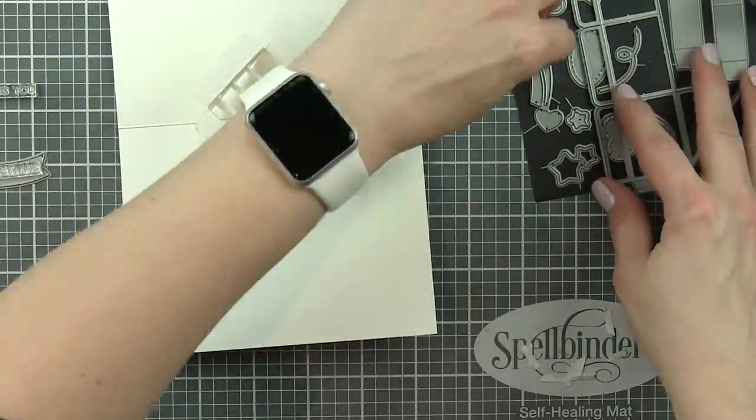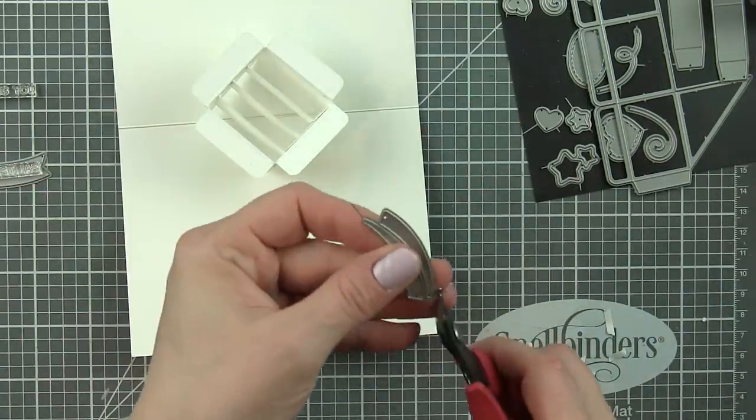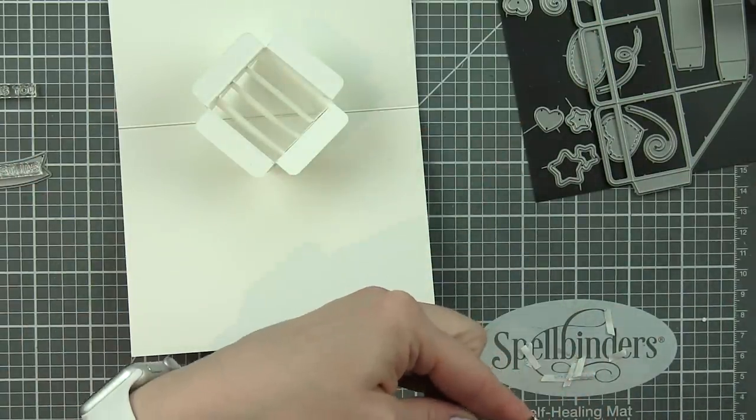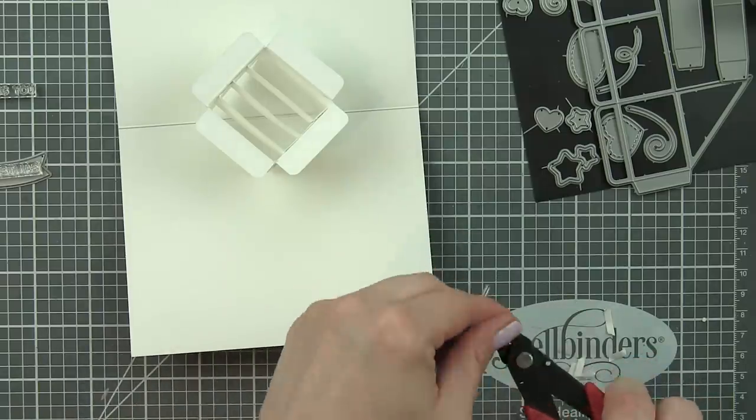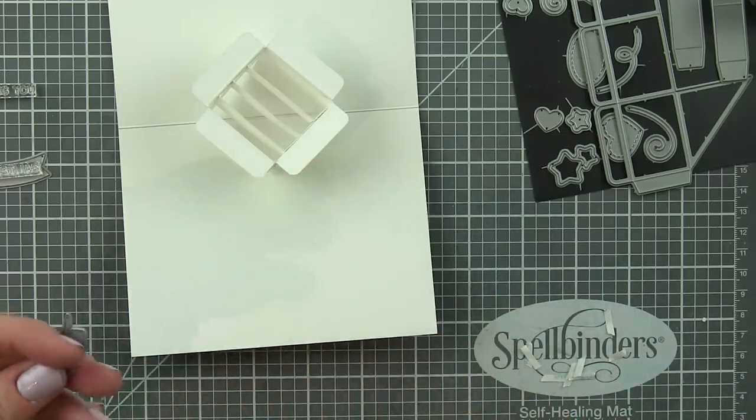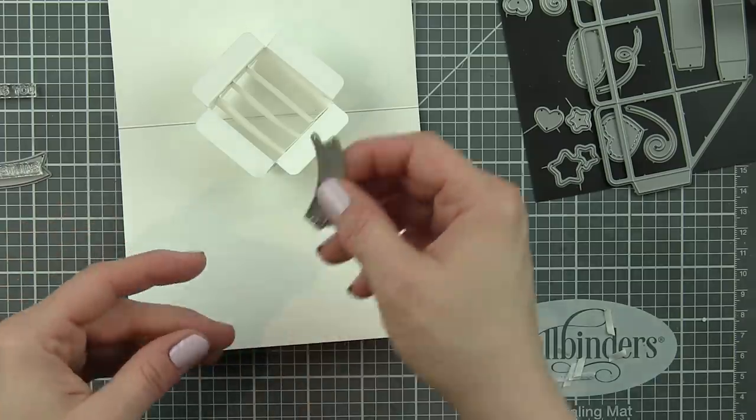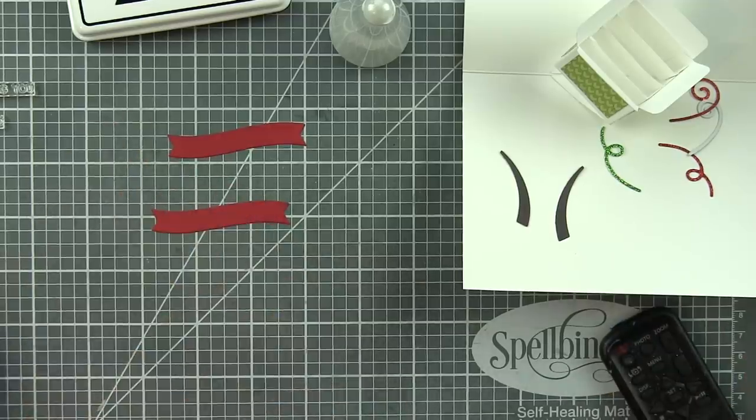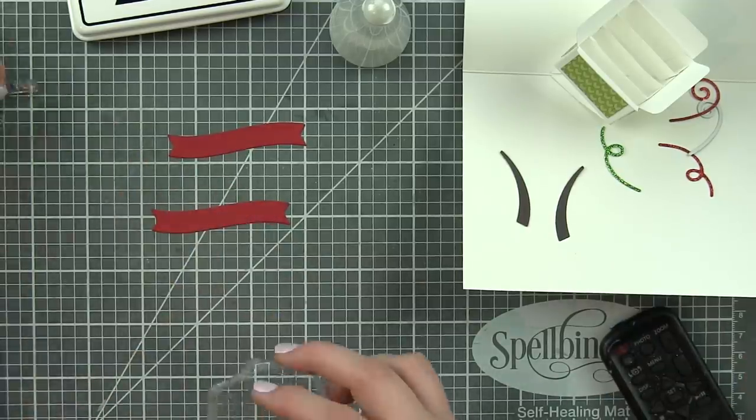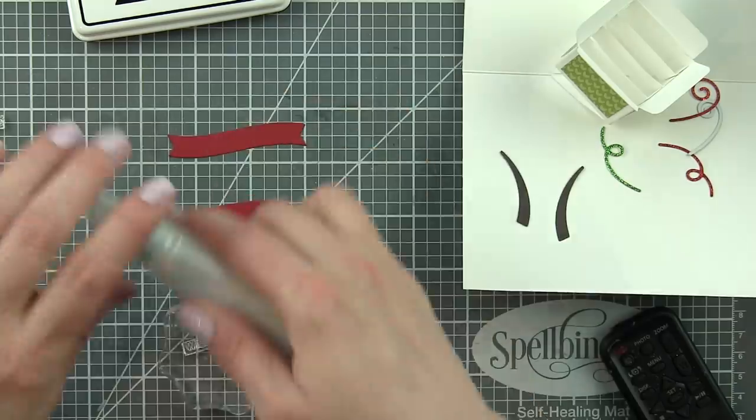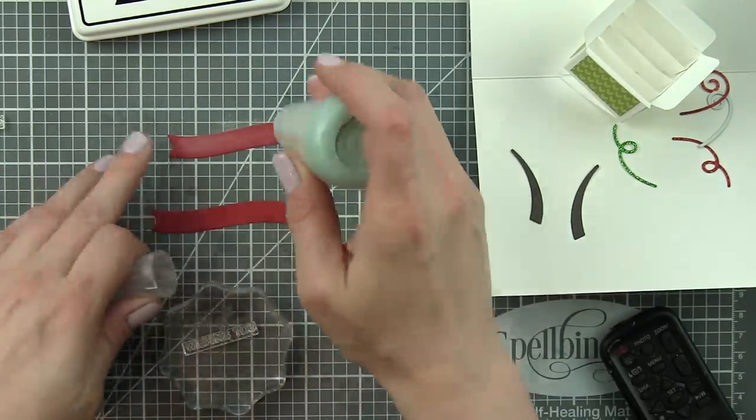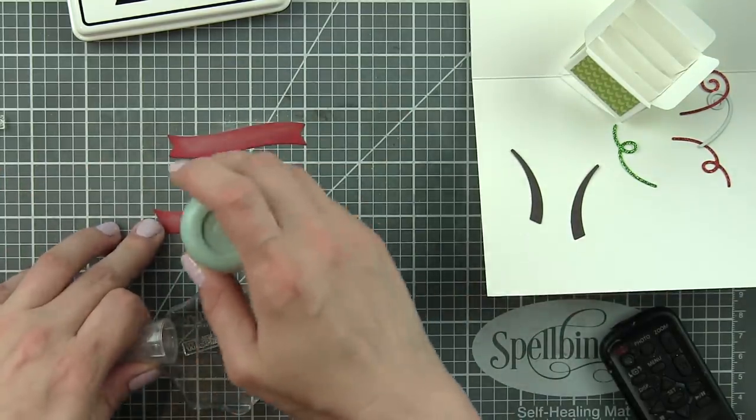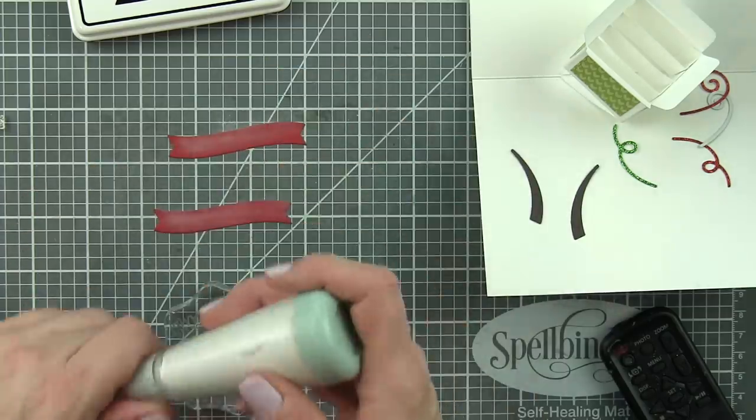Now with the mini pop-up box is this great little banner. I'm going to die cut the banner twice from some chili pepper cardstock. Again, keeping with my red and green theme. Then there's these little pieces here, this die I'm showing you. I'm going to die cut that from some of that brown woodgrain cardstock. This is what kind of holds your banner up. It's kind of like little sticks that hold it up from your box.